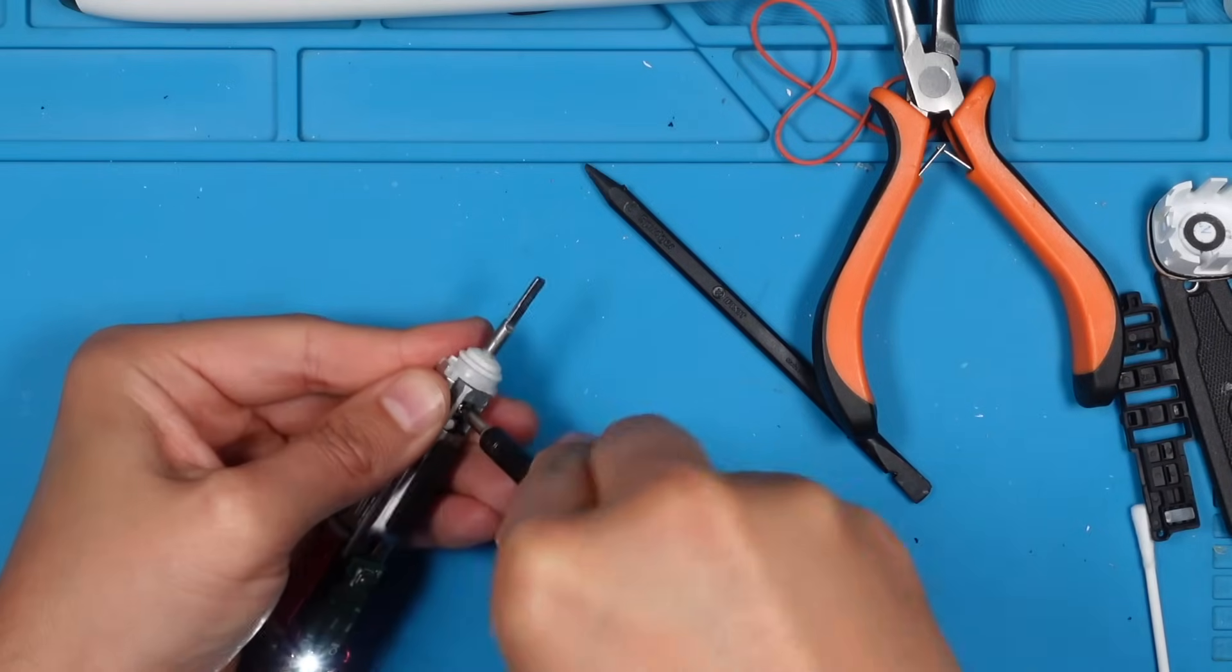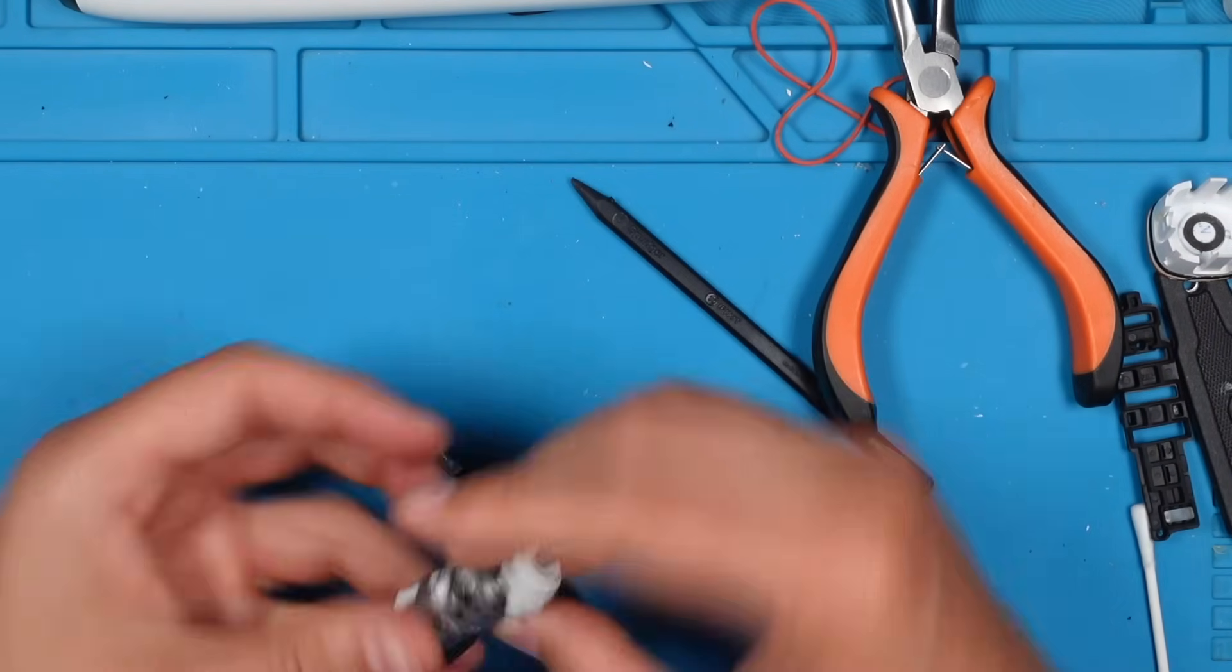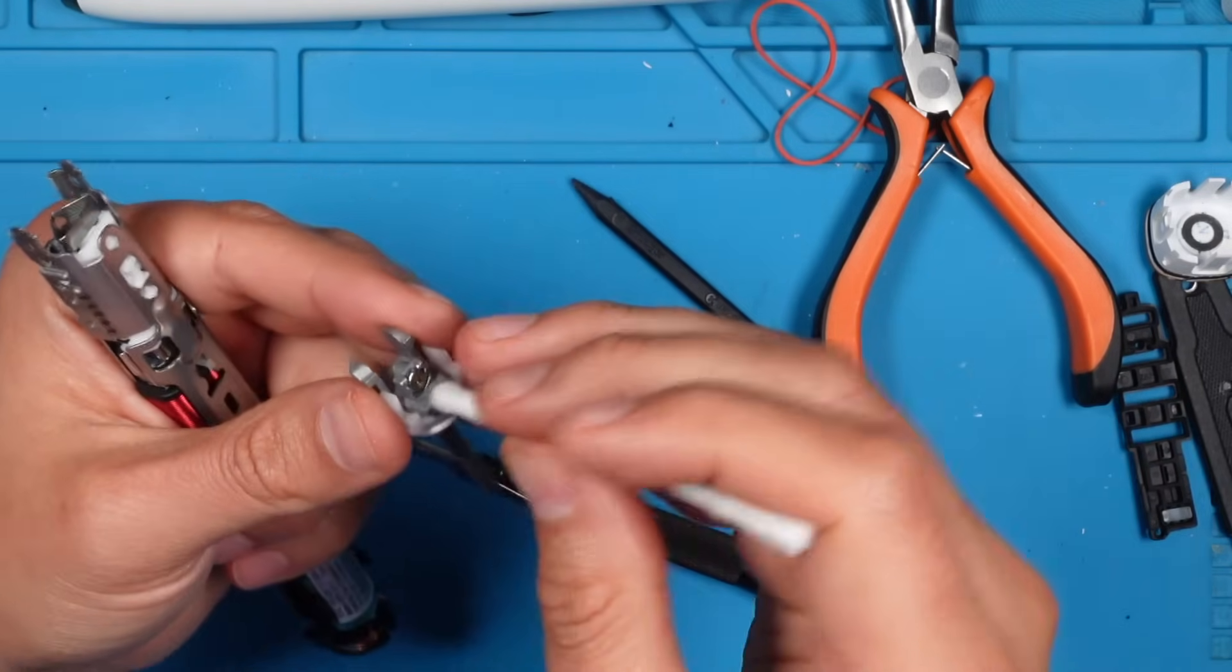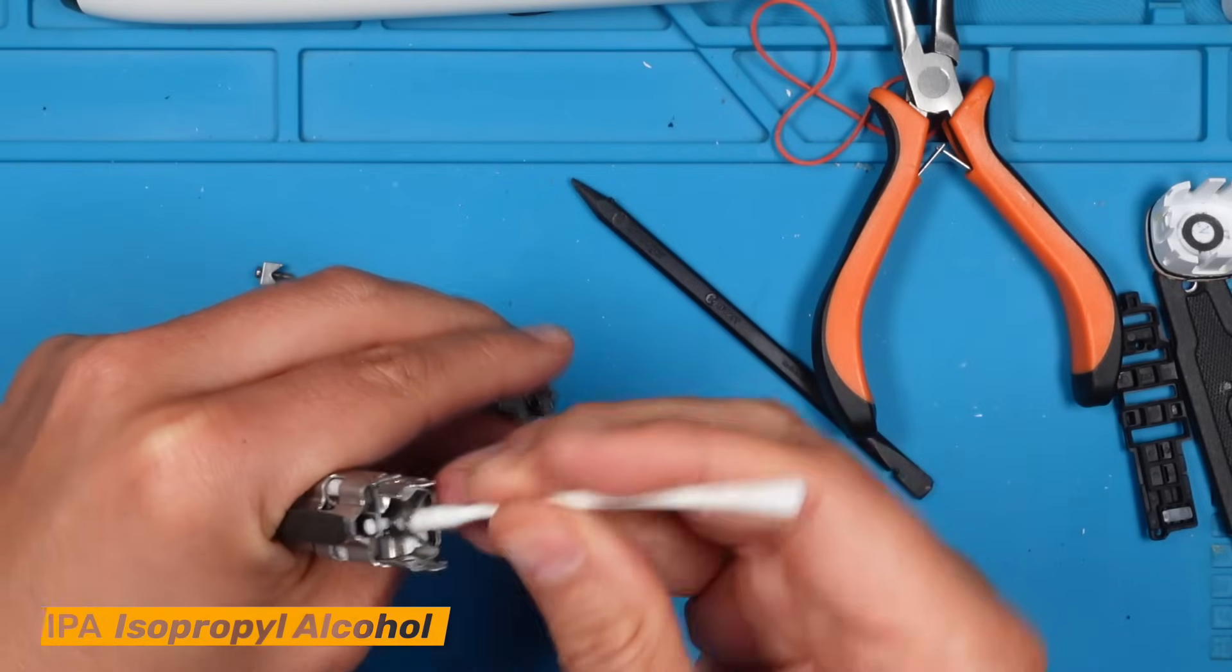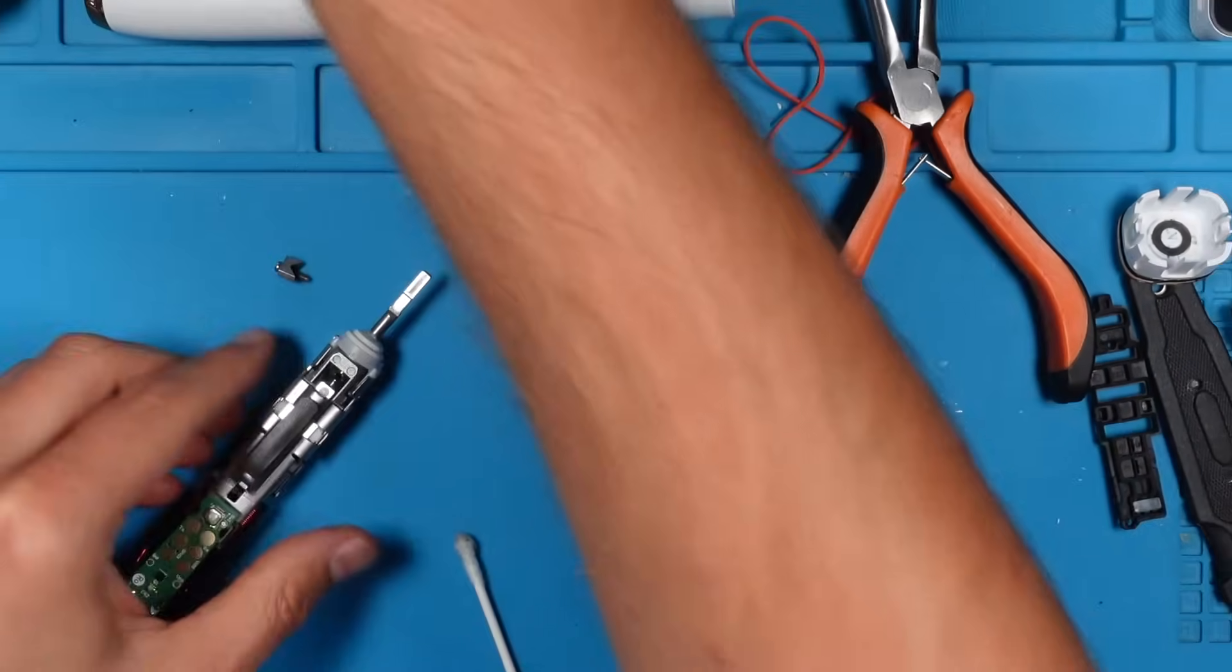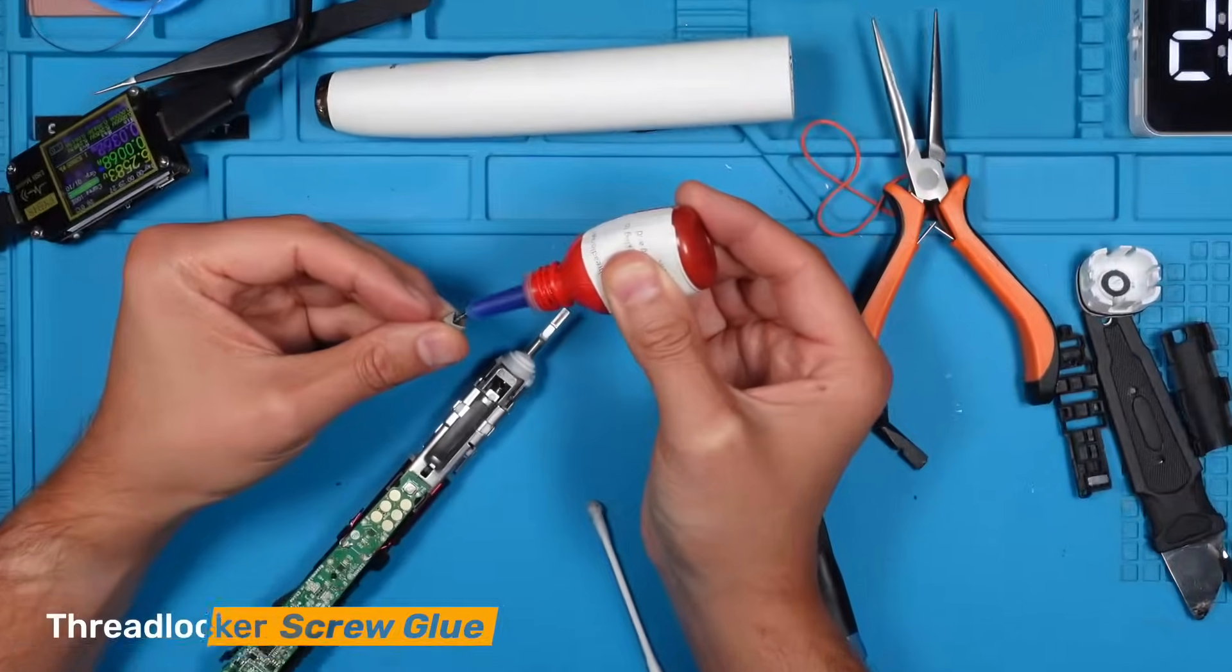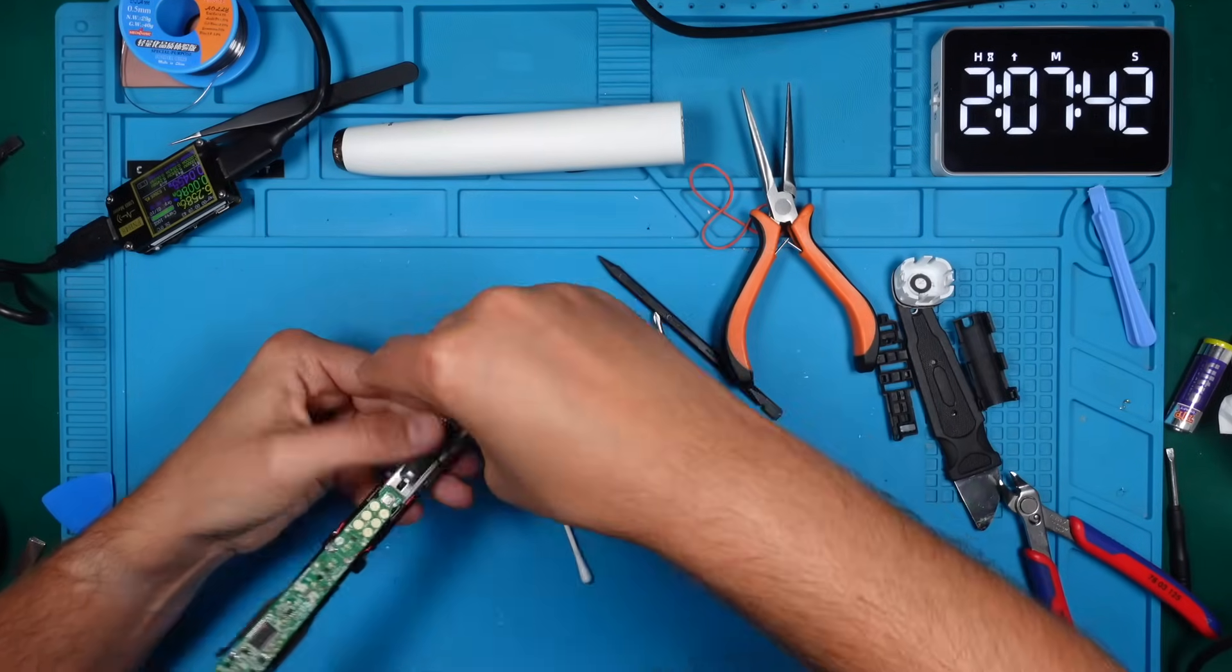To prevent the top from coming loose in the future, we will disassemble it. We can see very light rust and dirt. Let's clean it quickly with IPA and a cotton swab. Put it back in its place. Let's grab some threadlocker to prevent the screw from coming loose in the future and screw it back on.